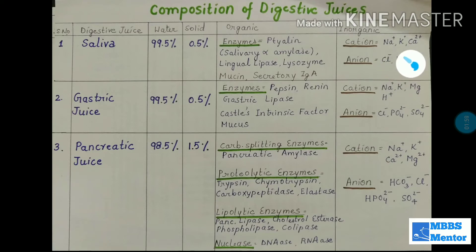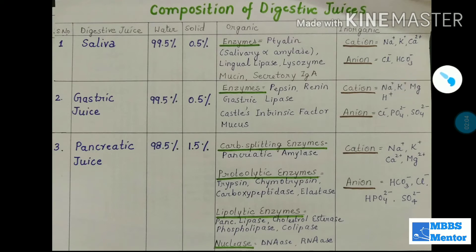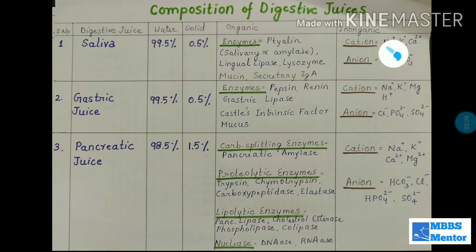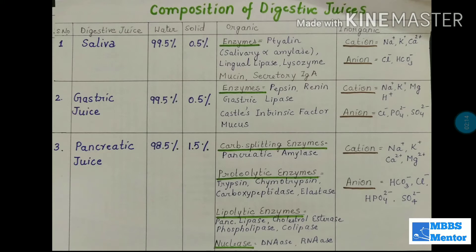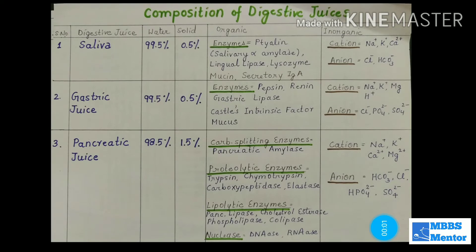Cations in saliva are sodium, potassium, and calcium. Anions are chloride and bicarbonate ions — these are negative ions. Chloride ions act as an activator for the salivary amylase enzyme, and similarly so do bicarbonate ions.